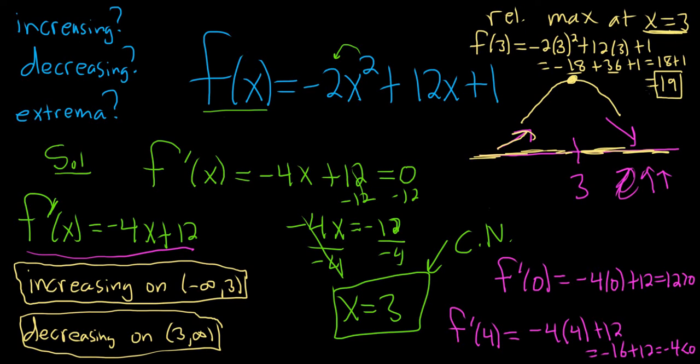If you want the ordered pair, it would be 3 comma 19. That would be the ordered pair where you have a relative maximum. And there is no minimum, right? There is no minimum in this problem. It just didn't happen. So I hope this video has been helpful. Good luck.